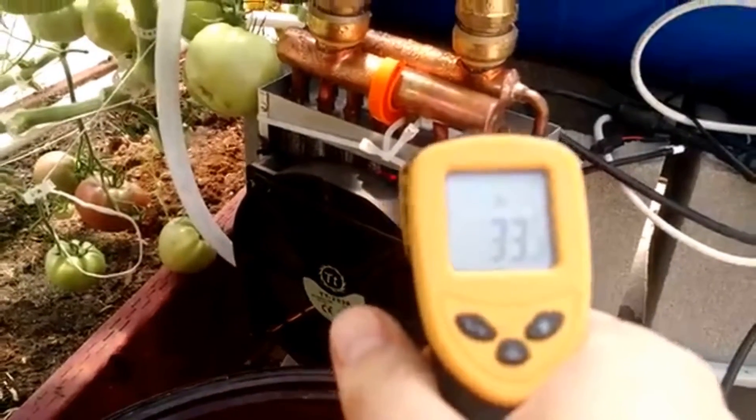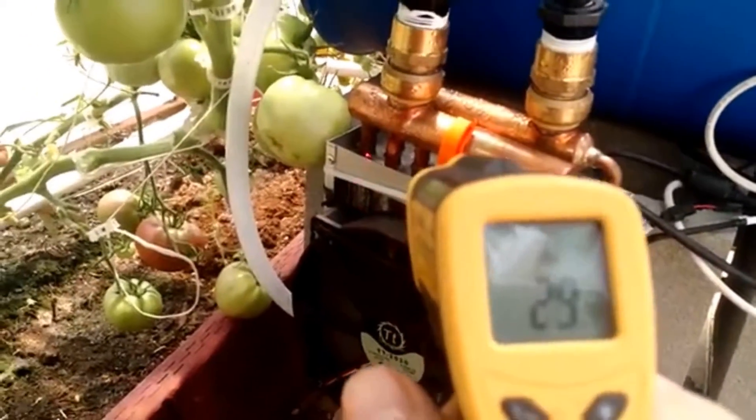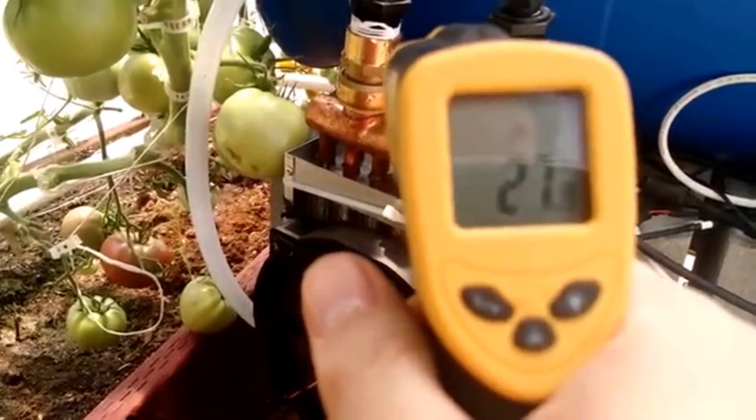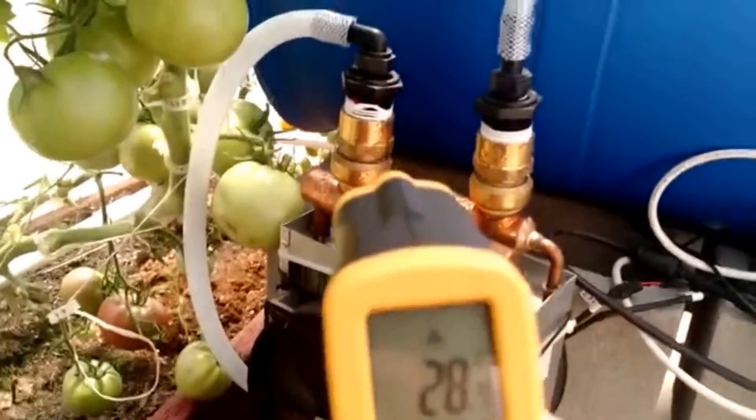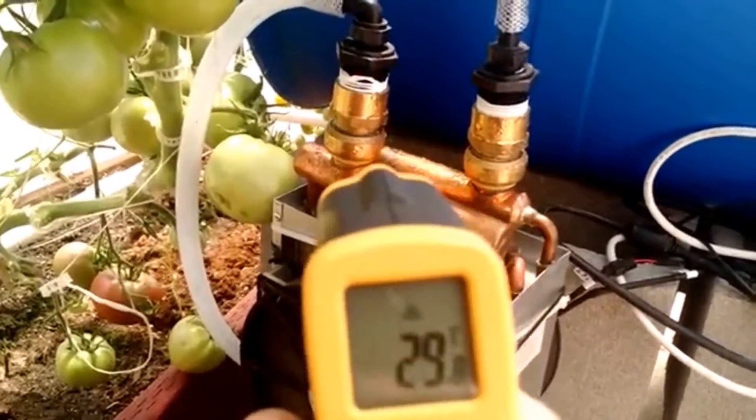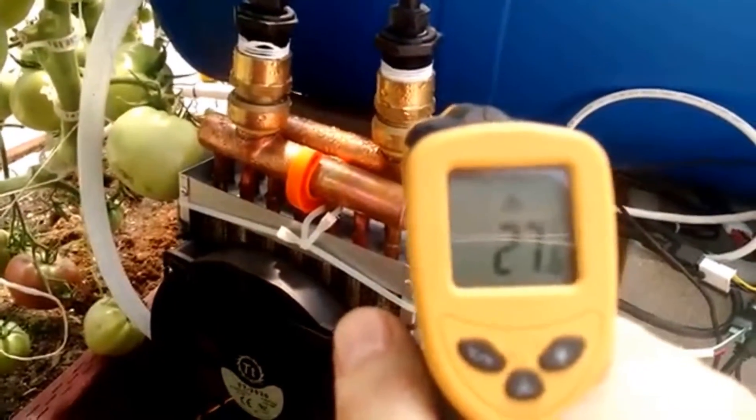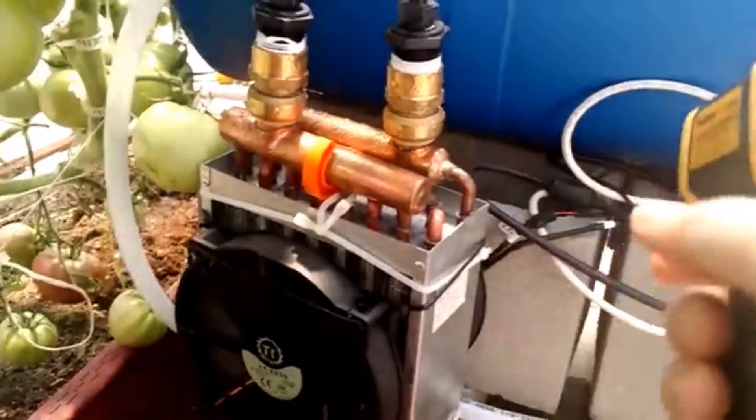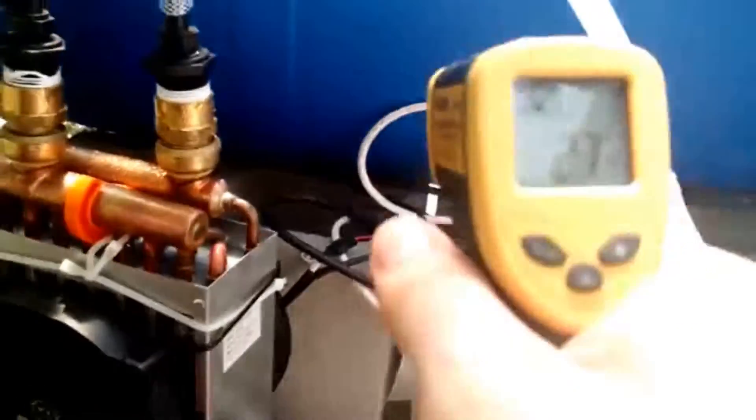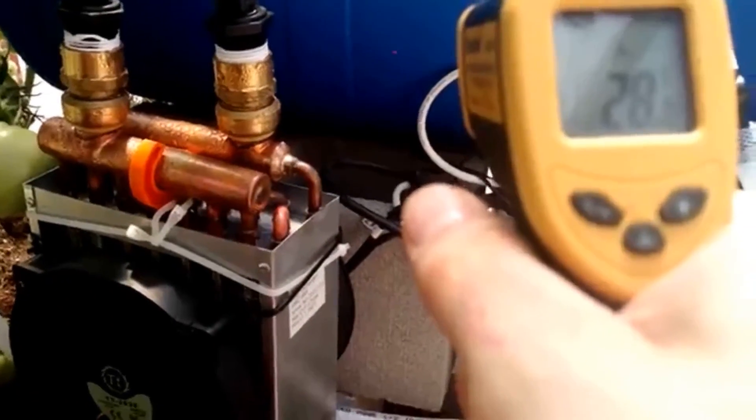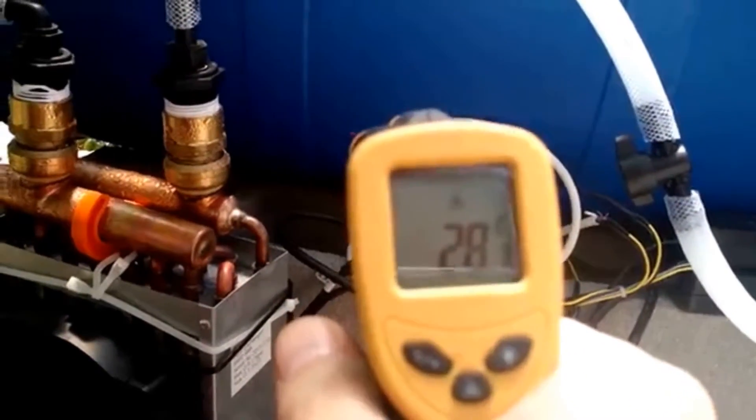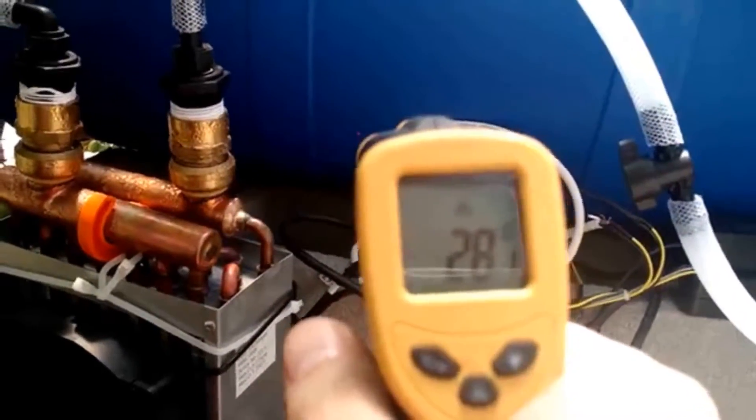See if it's any different down below - 27. This is the input line that I'm measuring now, you can see the red dot. This is the output line - 27, so not bad. This is our reservoir, that's about 28, so not much more than the water that's coming up from the geothermal.